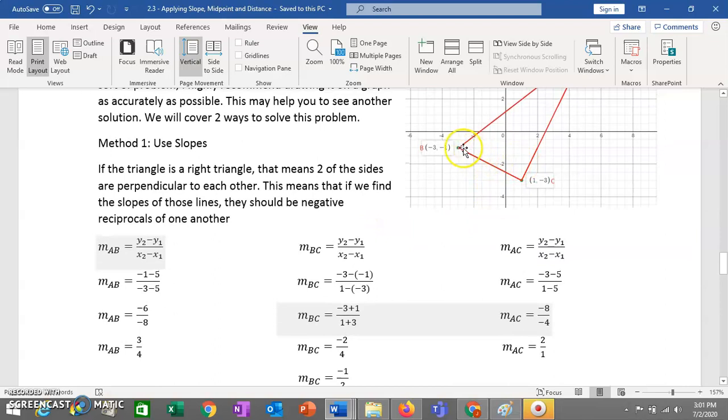And we have points so we can use our y2 minus y1 over x2 minus x1 formula. So for AB, for example, we plug those into the formula and we are able to calculate our slope, which ends up being 3 out of 4. We don't expect that number to help us very much because the right angle is here. But I'm just going to calculate it anyway. Same thing for BC.